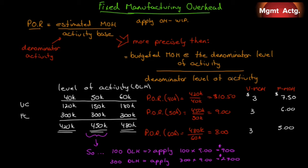Using the pewter bookends example from the book, let's look at different levels of activity in direct labor hours: 40,000, 50,000, and 60,000 for the year. We'll break down manufacturing overhead into a variable and fixed component. The variable component moves from $120,000 at 40,000 hours to $180,000 at 60,000 hours — that's $3.00 per direct labor hour. Our fixed costs are constant across the entire relevant range.